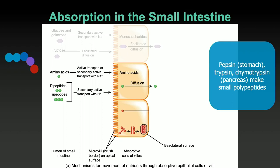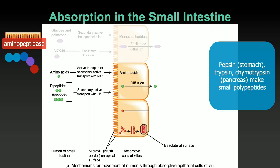Anything longer needs to be broken down. Brush border enzymes again — there are two major brush border enzymes. One is aminopeptidase. You'll learn in biochemistry there are two ends of a polypeptide: the amino end and the carboxy end, the N-terminal and C-terminal. This is just like alpha-dextrinase — it cleaves off amino acids one at a time from the amino end of the polypeptide. Hence, aminopeptidase. We can deal with most of the longer polypeptides this way.